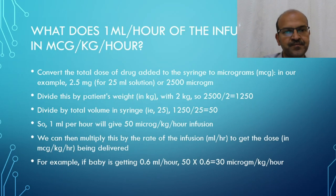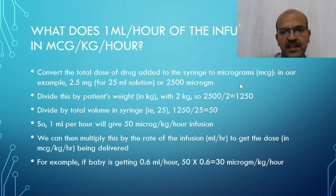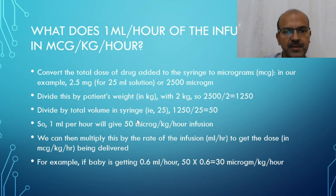Similar to what we did with dopamine in microgram per minute, here it is microgram per kilogram per hour. To calculate what 1 ml per hour of the infusion equals in microgram per kilogram per hour, we convert the total drug in the syringe to microgram: 2.5 milligram added to a 25 ml solution equals 2500 microgram. Divide by the patient's weight — for a 2 kg baby, 2500 divided by 2 is 1250 microgram — then divide by the total volume of 25 ml.